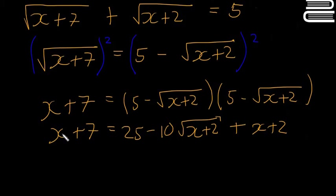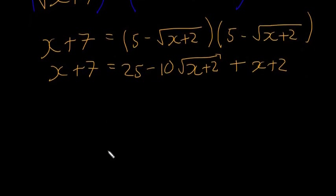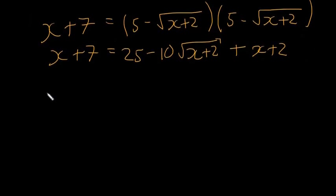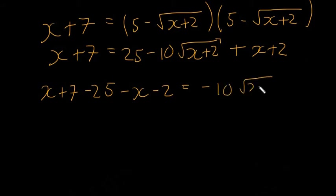So now what we're going to do is we're going to move everything over to this side except for the surds. We're going to keep the surd on one side, everything else on the other side, and then we're going to square. So we're basically back to what we had in the last video. So it's going to be x plus seven minus 25 minus x minus two is equal to minus 10 times the square root of x plus two.